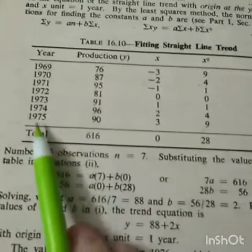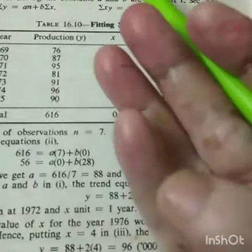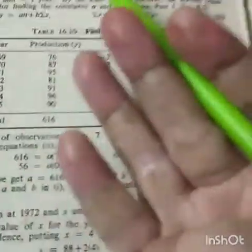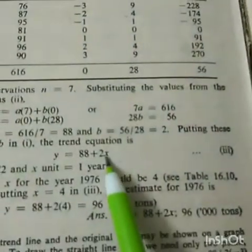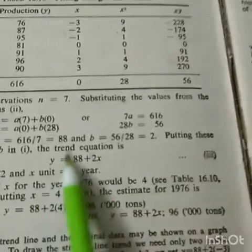If you think 1980, what is happening? 1975 is 3, then 76, 77, 78, 79, 80 - so 4, 5, 6, 7, 8. Either x is 8. Put 8 and production is equal to 88 plus 2 times 8, which equals 104. That is 1980 production.